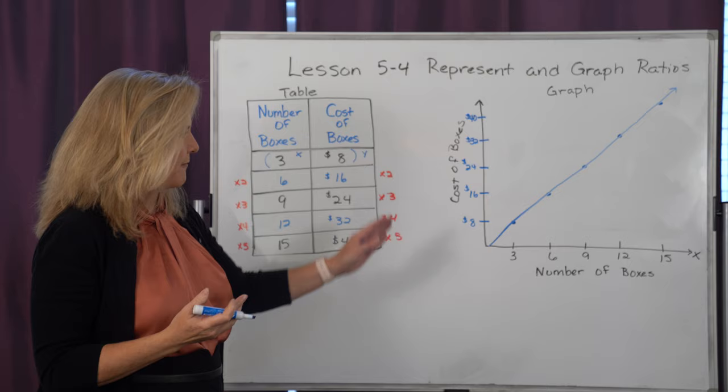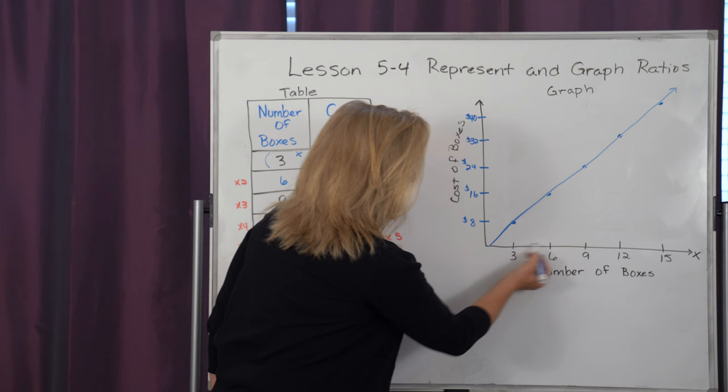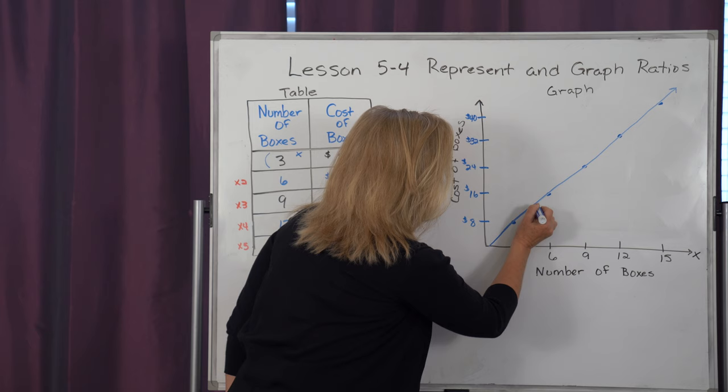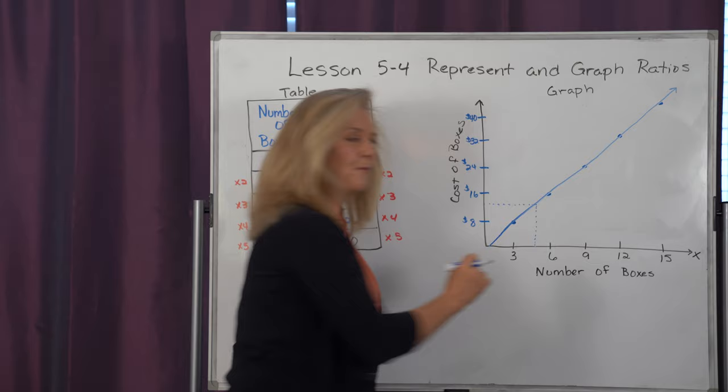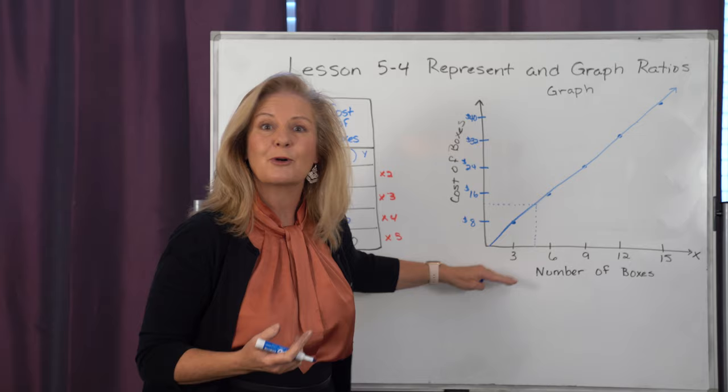And what I could even do is go to a number in between. And if I go up to the line and I pull it over, it's going to give me costs and the number of boxes. It could be like partial boxes if I wanted, for numbers not represented on the graph. That's the power of the graph.